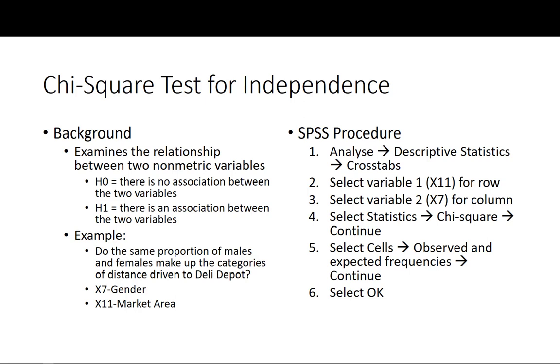Do the same proportion of males and females make up the categories of distance driven to Delhi Depot? This is a kind of question that can be answered with the chi-square. In the example I'm going to show you, I'm going to look at the relationship between gender and market area in our Delhi Depot data.